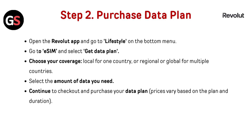Step 2: Purchase a data plan. Open the Revolt app and go to Lifestyle on the bottom menu. Go to eSIM and select 'Get Data Plan.' Choose your coverage — local for one country, or regional or global for multiple countries. Select the amount of data you need, continue to checkout, and purchase your data plan. Prices vary based on the plan and duration.